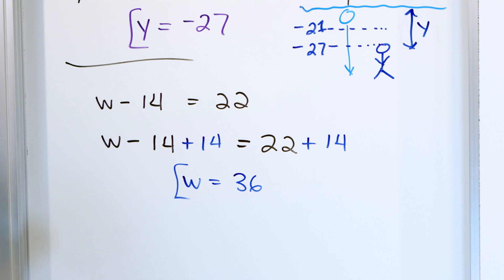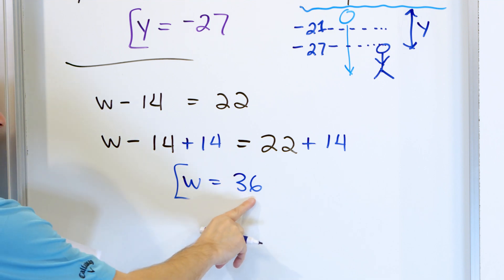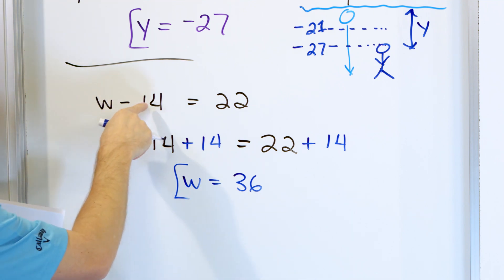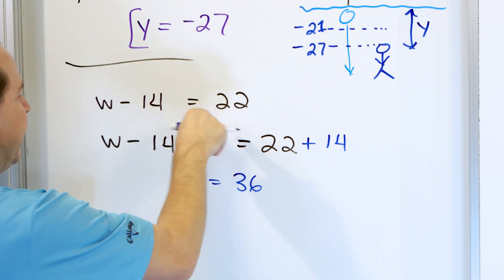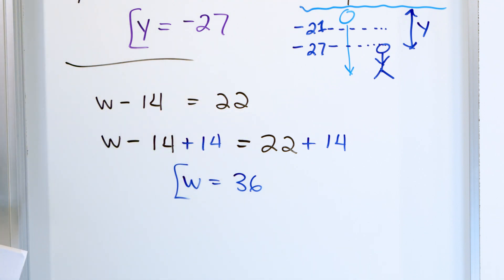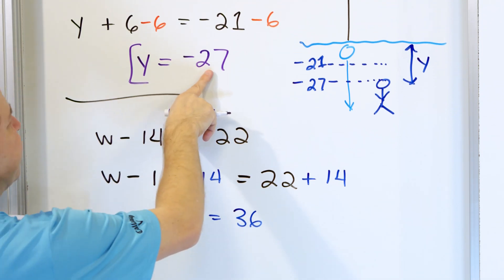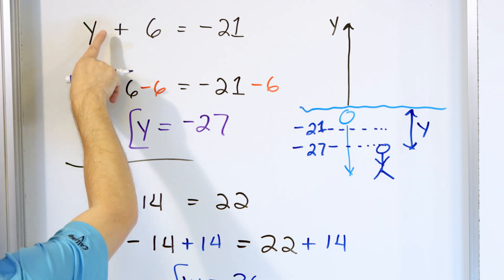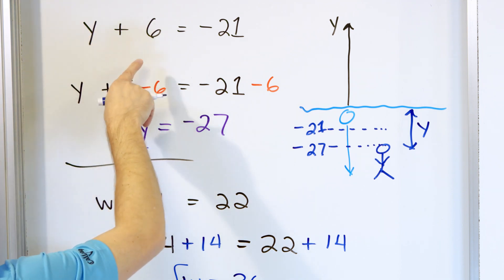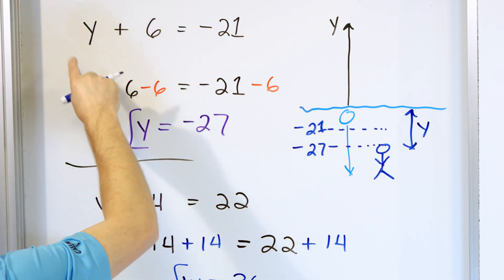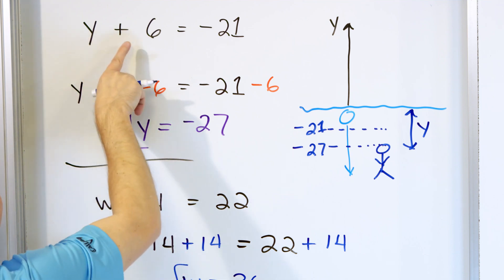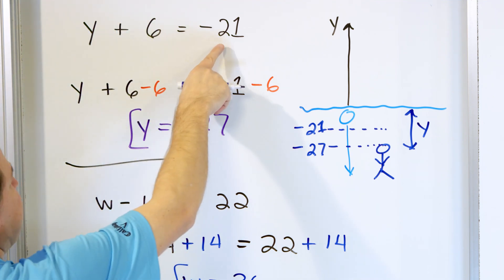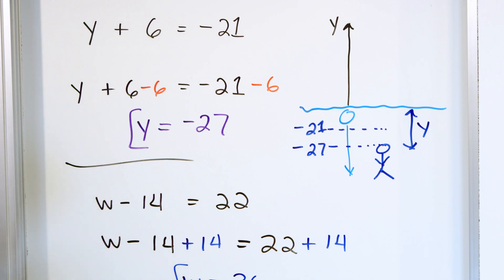The only thing left is w. And what is 22 plus 14? That's going to be 30, and then 2 plus 4 is 6, so 36. So the answer is w equals 36. You can check this by putting 36 back in: 36 minus 14 is indeed 22. And you can check the first one: negative 27 plus 6, using addition of integers with absolute values, gives negative 21.